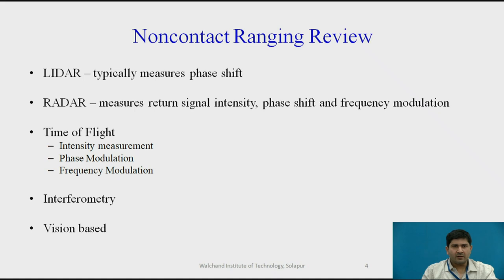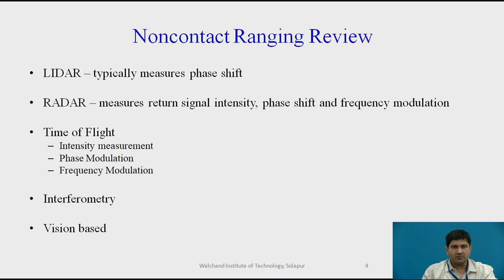Non-contact ranging includes different types such as LIDAR, RADAR, and SONAR. LIDAR typically measures phase shift; RADAR measures return signal intensity, phase shift, and frequency modulation — they are all widely used. Phase shift is preferred in RADAR because the speed of light is very significant. SONAR typically uses sound waves where the speed is significantly slower than light, hence you need very sophisticated equipment to measure time of flight when it comes to light. It is more prudent to use techniques which measure phase shift, and these are very accurate techniques.